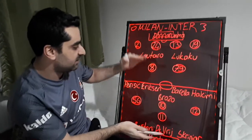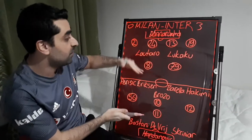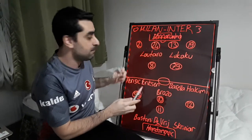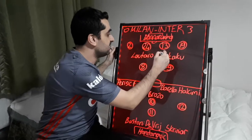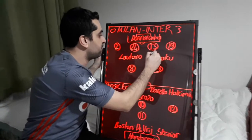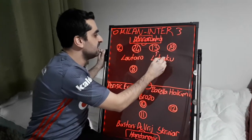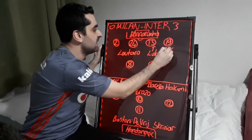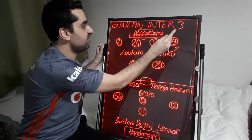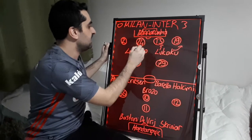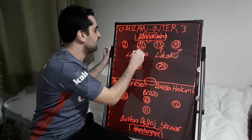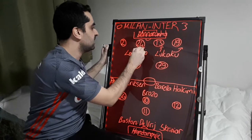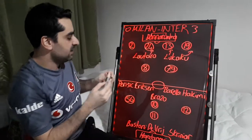Inter played in a classical 3-5-2 formation. In this game, Lukaku made press on defender Romagnoli. Lukaku came close to the right and forced the left back of Milan. And Lautaro played close to another defender, Simon Kaya.